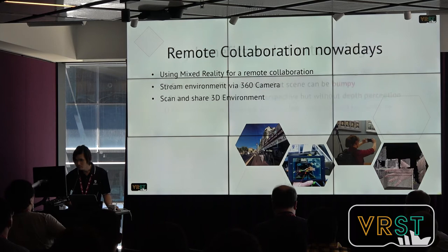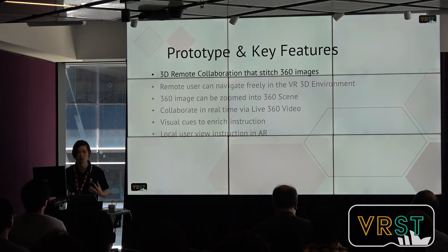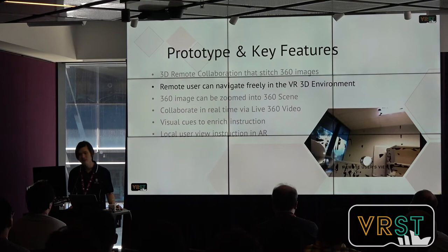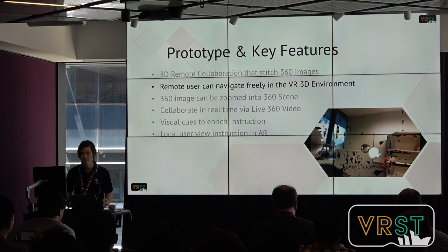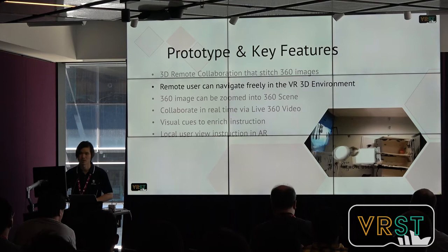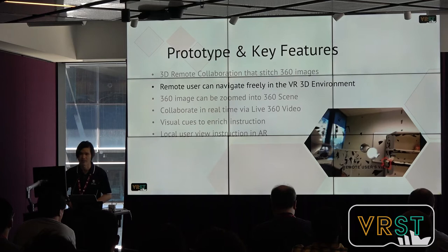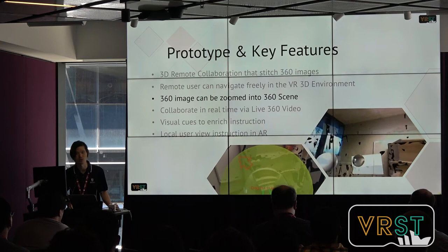Our prototype takes the 3D remote collaboration system as a baseline, then stitches in 360 images and 360 live video to create a hybrid collaboration system. The remote expert worker receives a static 3D reconstruction of the local user's scene beforehand, using the HoloLens platform to reconstruct scenes and give the remote user a rough high-level understanding of the environment. Because it is 3D, it allows the remote user to walk around the scene independently.